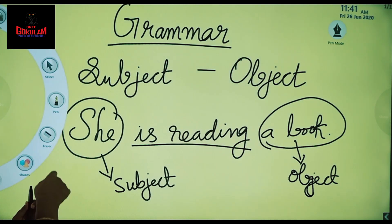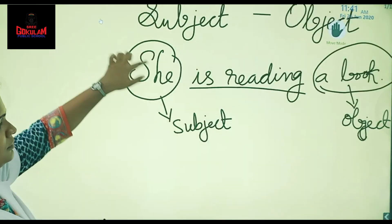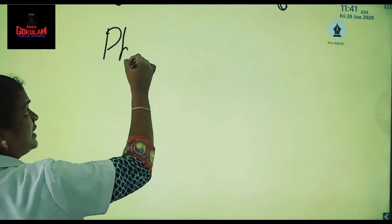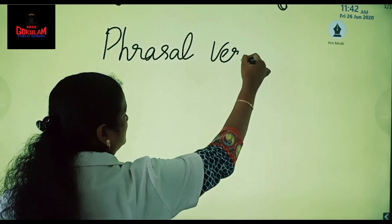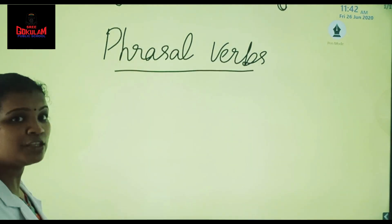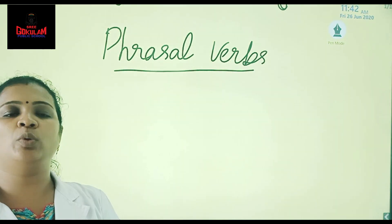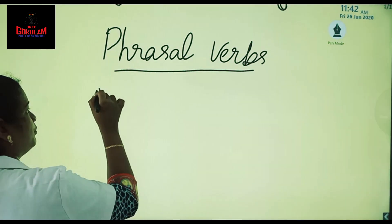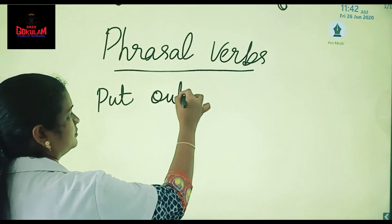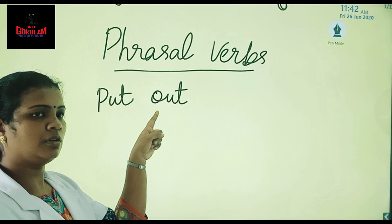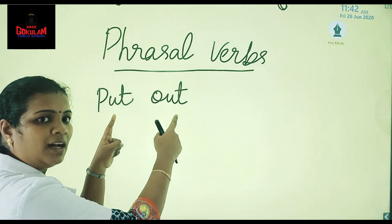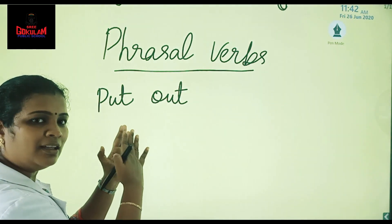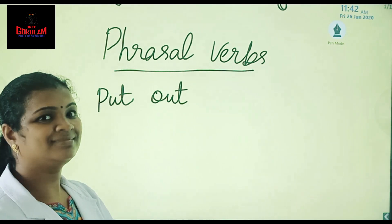And we have one more thing to study in this chapter called phrasal words. Have you heard about phrasal words? A phrasal word will contain two words. For example, I can give you: 'out.' Both these words have their own meaning. When they come together, they will form some other meaning that you might not think of at all.